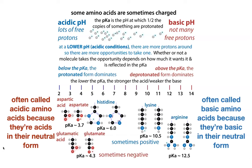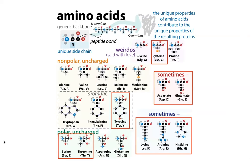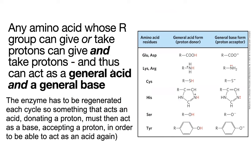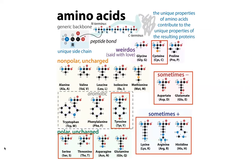For the basic amino acids — histidine, lysine, and arginine — we call them bases because in their neutral form they act as a base, take a proton, and become positively charged. In this positively charged state, they're in their conjugate acid form and can act as an acid. But they're not the only ones that can act as acids and bases. Any amino acid that can give or take protons can do this — not only our acidic and basic amino acids, but also those with hydroxyl groups like serine, tyrosine, and threonine, and those with thiol groups like cysteine. All of these can serve as general acids and general bases.